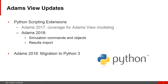Moving on to ADAMS View — Python scripting work continues. In ADAMS 2017 we introduced the Python scripting alternative to the ADAMS View CMD language, covering modeling actions such as building objects in the database. This release, the ADAMS Python interface is extended in ADAMS 2018 to cover simulation commands, objects, results import actions, and simulation settings. Going forward this calendar year, we'll be working on extending Python scripting to other areas such as the ADAMS post-processor.